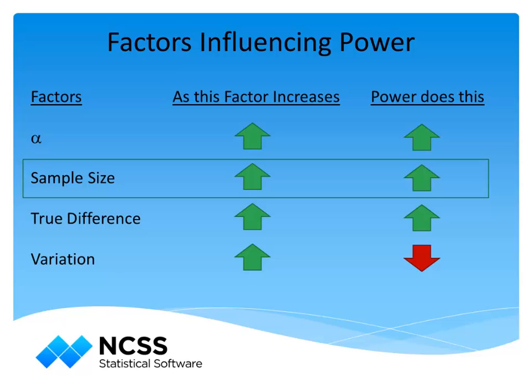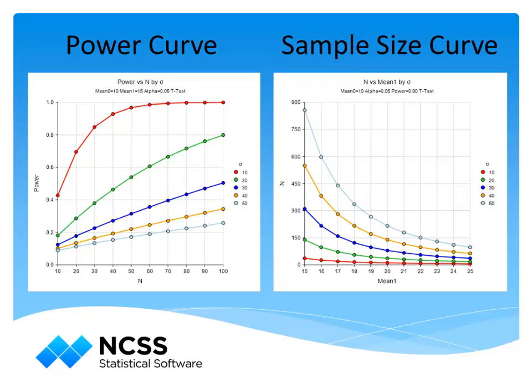The most common use of PASS software is to determine the sample size needed to achieve a given power under the alpha, population difference, and variation constraints. The true population parameters, as well as the true variation, are rarely known in advance of a study — otherwise, why would the study be taking place? Therefore, the investigator must make an educated guess as to the true population parameter difference and variation. A very useful exercise is to consider a range of differences and variation values and examine their effect on the power or sample size, most easily analyzed using power or sample size curves.